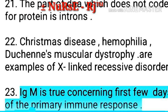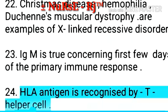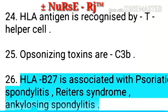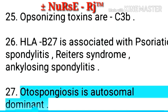Point 23: IgM is true concerning the first few days of the primary immune response. Point 24: HLA antigen is recognized by T-helper cells. Point 25: Opsonizing toxins are C3b. Point 26: HLA-B27 is associated with psoriatic spondylitis, Reiter's syndrome, and ankylosing spondylitis.